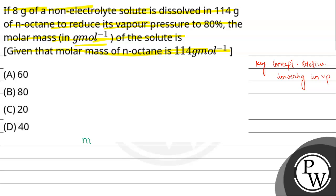Here, the molecular weight of the solute is what we have to calculate — let us assume it is x. The molar mass of N-octane is 114 gram per mole, and the given weight of N-octane is 114 grams.